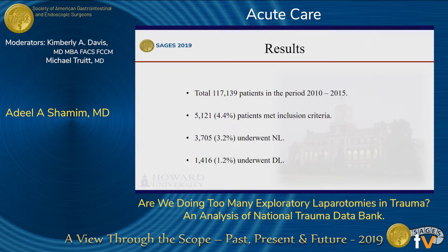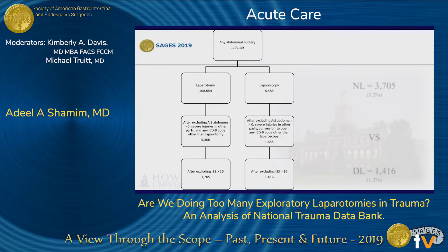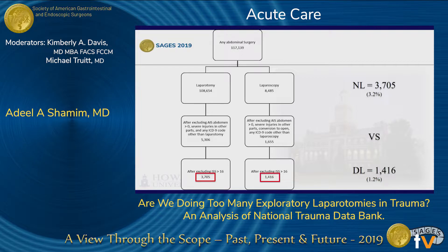There were a little over 117,000 patients who underwent abdominal surgeries during this time period, of which only 4.4% met the inclusion criteria: 3.2% underwent NL and 1.2% underwent DL. For the purpose of this study, 3,705 patients, or 3.2%, underwent NL, and 1,416 patients, or 1.2%, underwent DL. These two groups were assessed for outcomes.